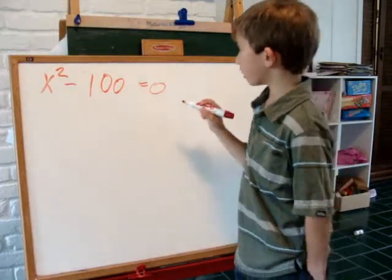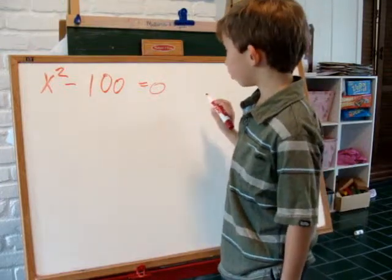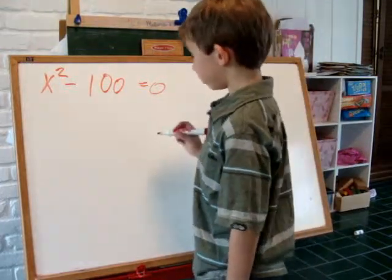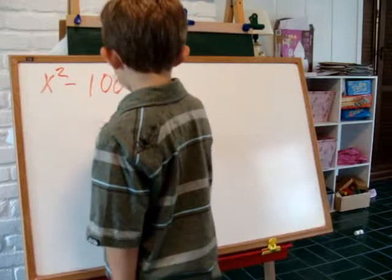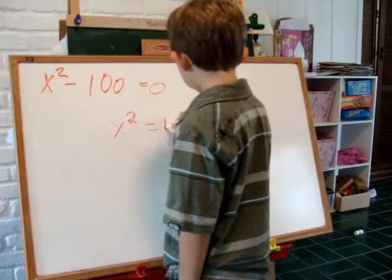Consider x squared minus 100 equals 0. First, we add 100 to both sides of the equation. We get x squared equals 100.